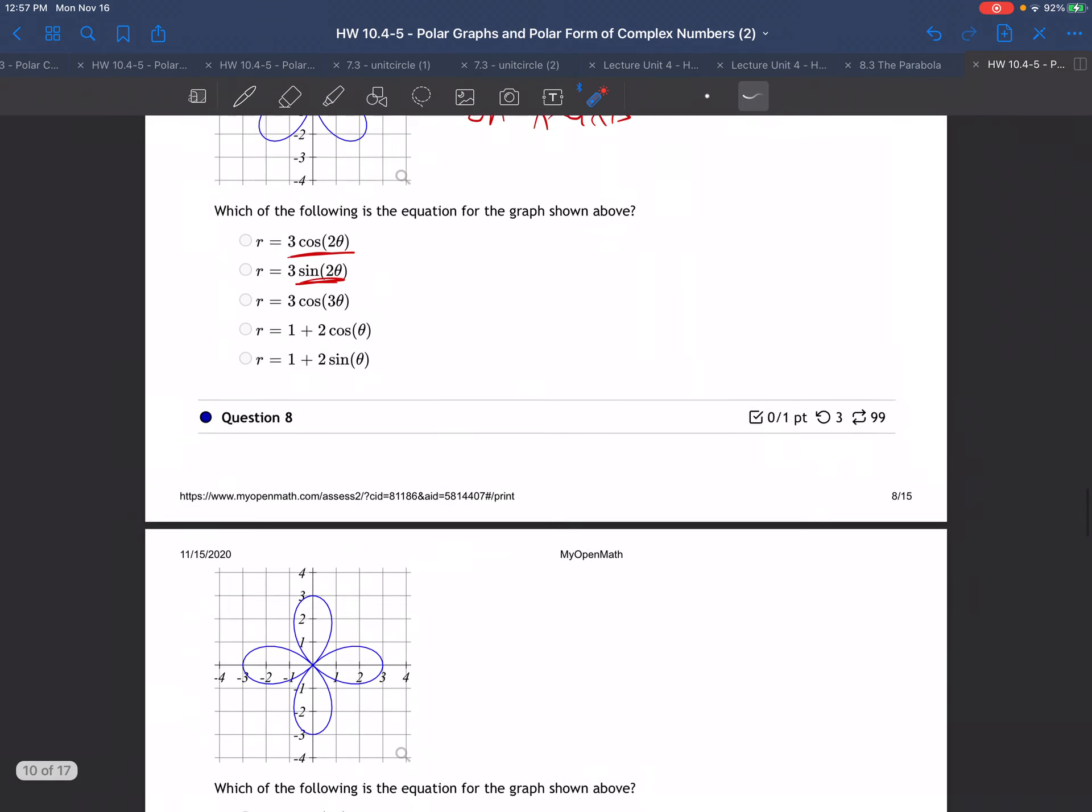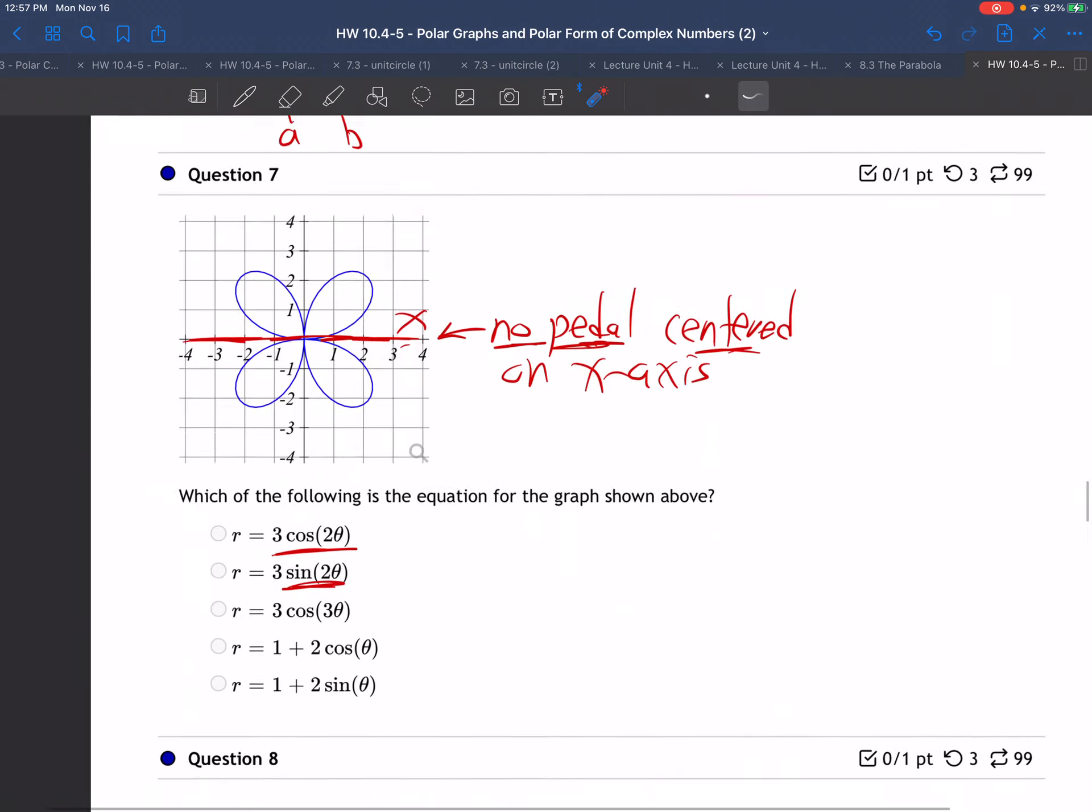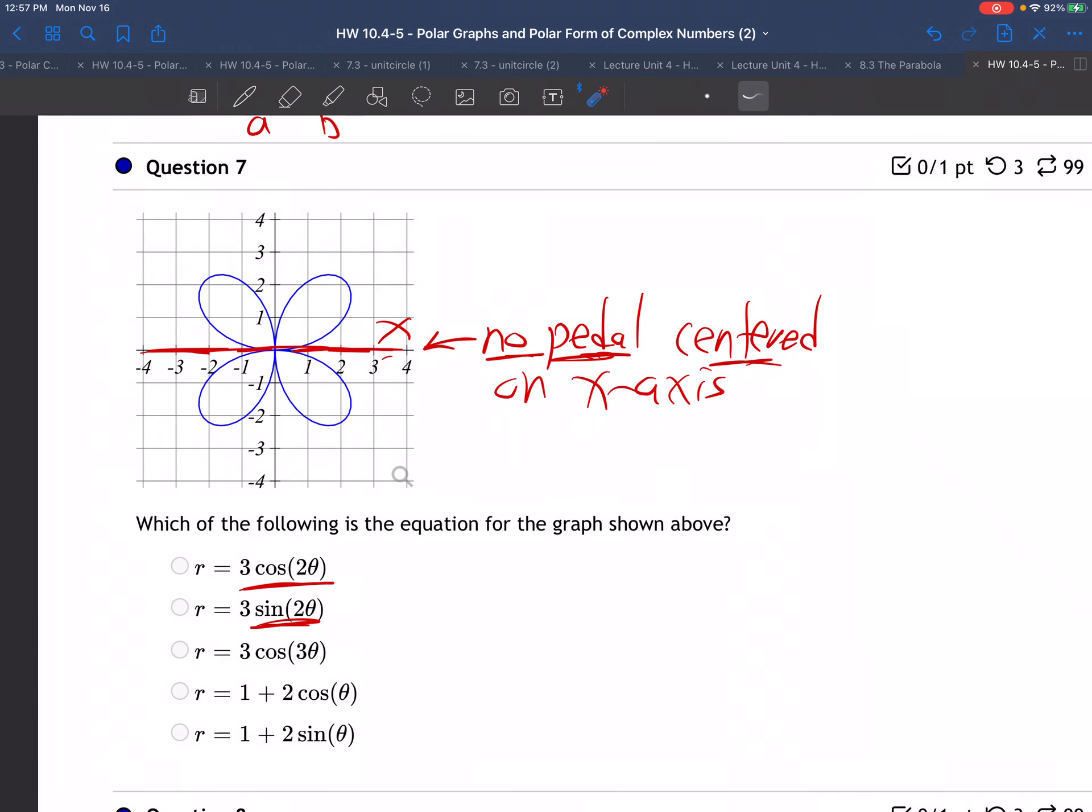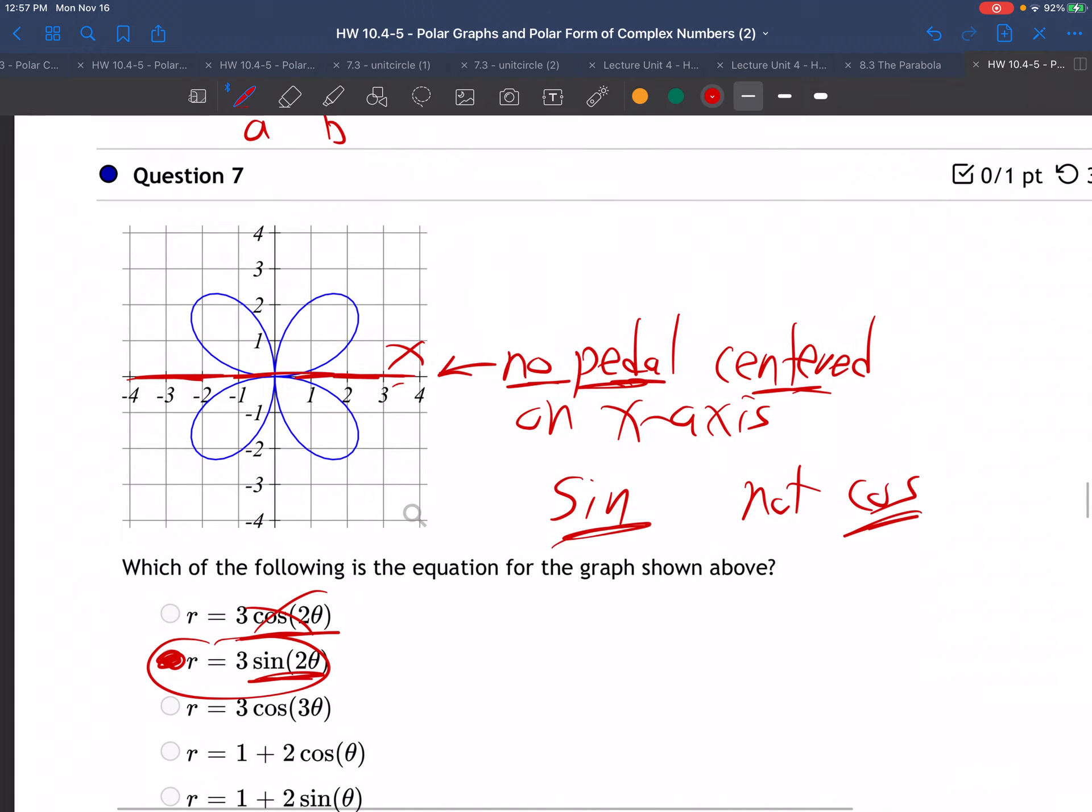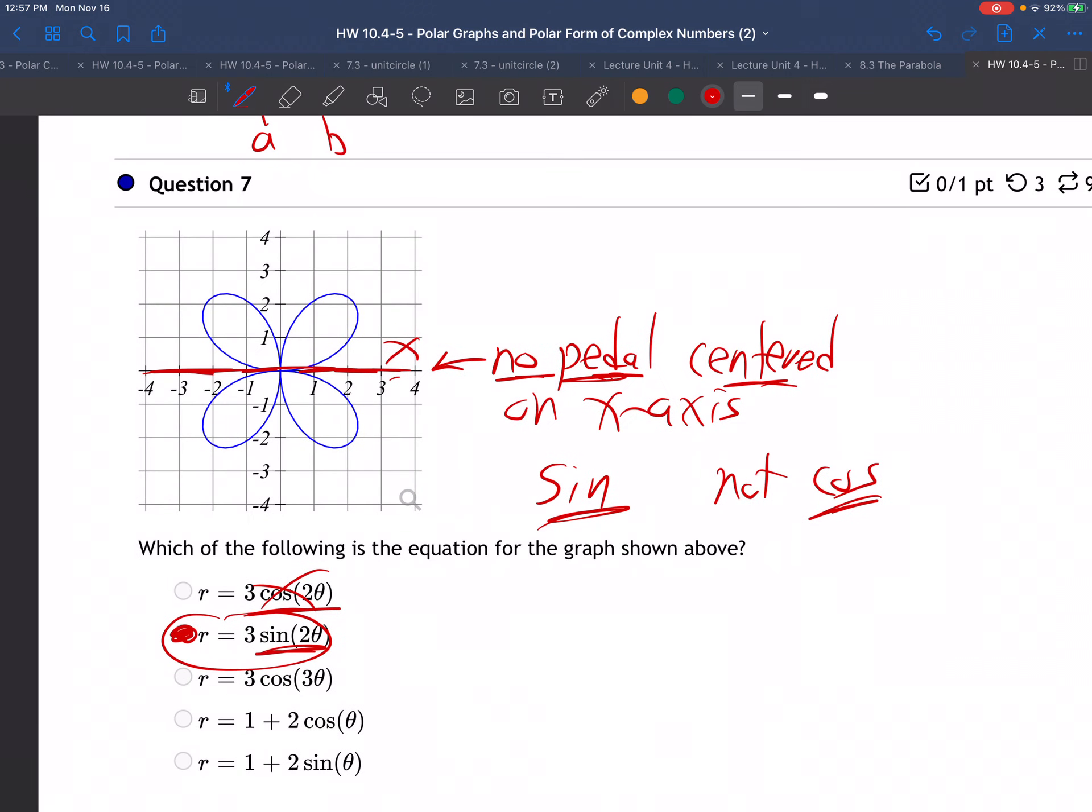So which was ours on this one? It's not centered on the x-axis. So it's a sine, not a cosine. If it was a cosine, it would be centered on the x-axis. So it's sine, it's this one. It's not a cosine because it's not centered on the x-axis. That fits with what the note says.